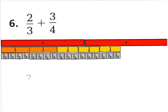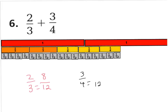Because 2/3 is equal to 8/12 — since 3 times 4 is 12, and 2 times 4 is 8 — that's why I have 8/12 up to this point. Now looking at 3/4: if I count up the 12ths for 3/4, I'd have 1/12, 2/12, 3/12, 4/12, 5/12, 6/12, 7/12, 8/12, 9/12. Because 3/4 is equal to 9/12 — since 4 times 3 is 12, so 3 times 3 is 9.